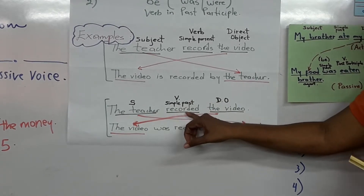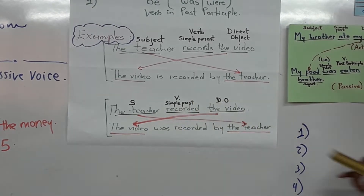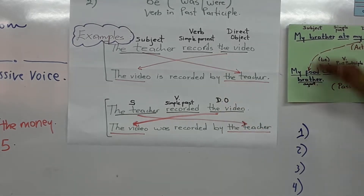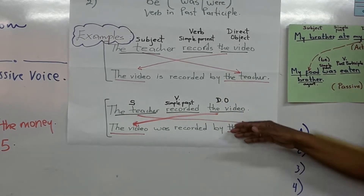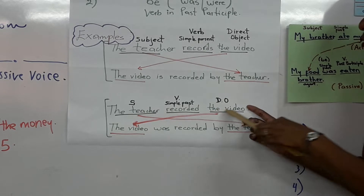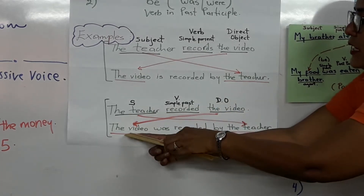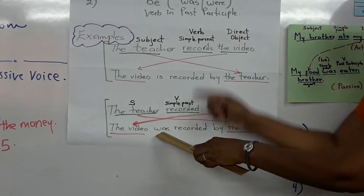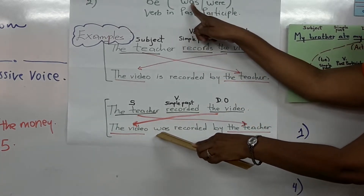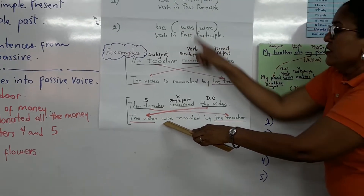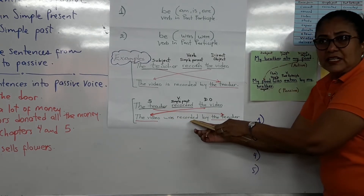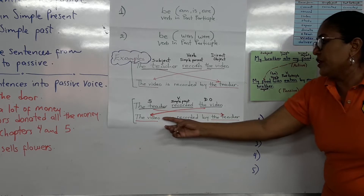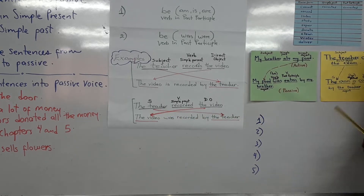'Recorded' is the past tense verb, and 'the video' is the direct object. I follow the same procedure — I move the direct object to become the subject. I say: 'The video was recorded by the teacher.' I use 'was' because it is the simple past of 'be', and 'recorded' is the past participle of the verb.